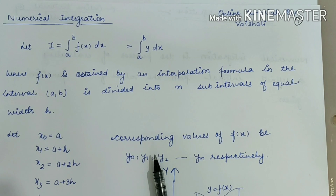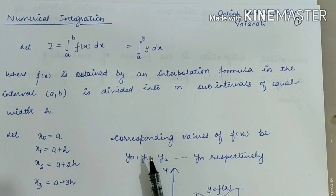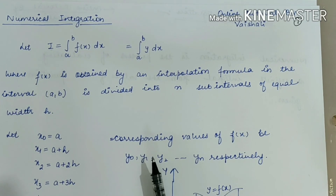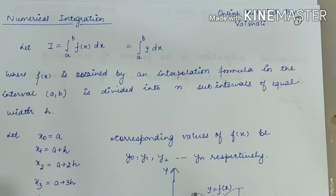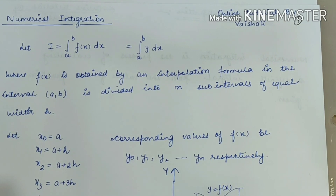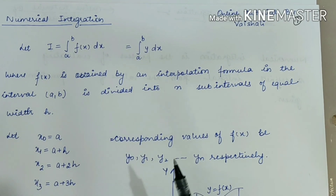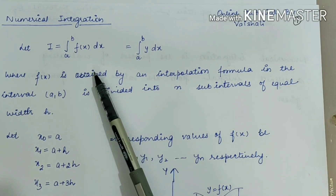So what is numerical integration? The numerical integration chapter is based on the concept of definite integral, in which we find the area of a given region. Similarly here, we will find the area under a given curve by the help of the Trapezoidal Rule. Now let's start with the derivation.